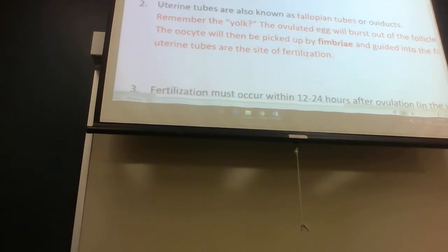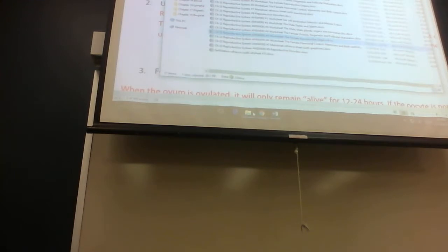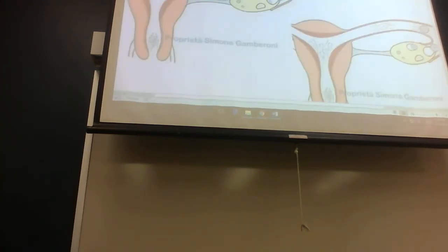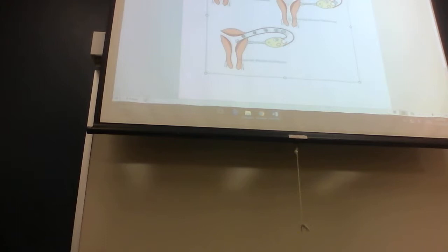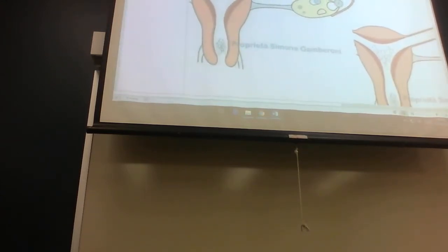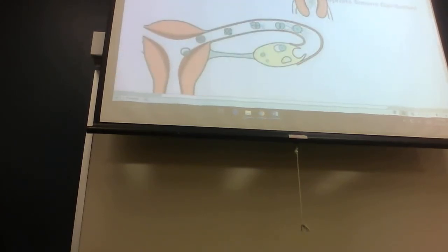So the uterine tubes can be called three different things: fallopian tubes or oviducts. Typically, you'll see uterine tubes and fallopian tubes a little bit more often. And within these tubes, this is the egg right here. This is the ovary. This is your uterine tube. Typically, an egg will flow out of the ovary and just kind of stay in the uterine tube. Sperm is over here. This is when you ovulate. Once the sperm attached to it and it gets fertilized, the egg will then transform and then implant in the uterus. That's why the uterine tubes are important.